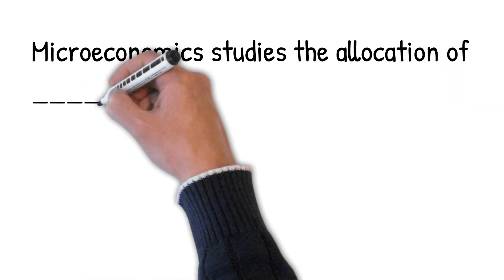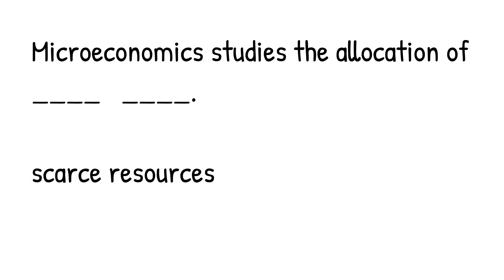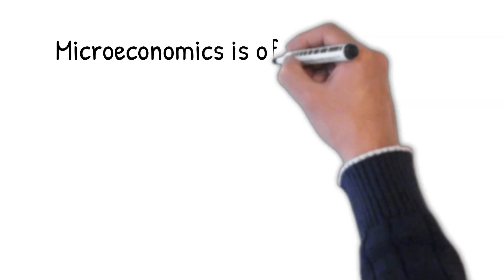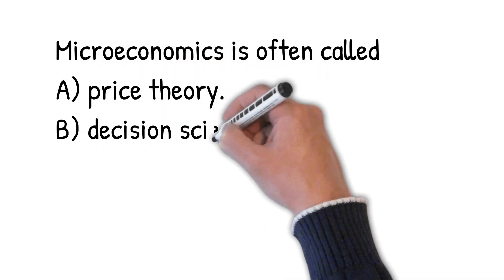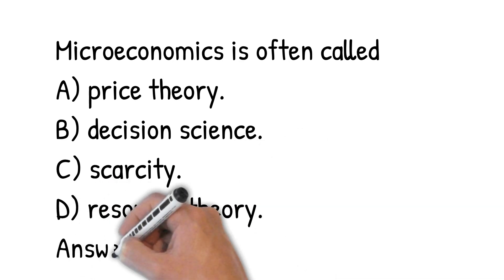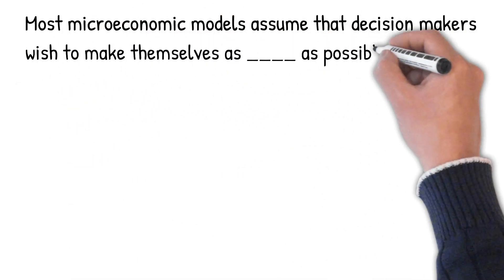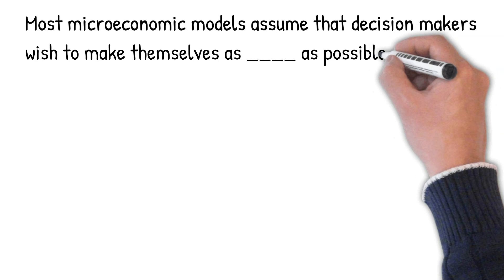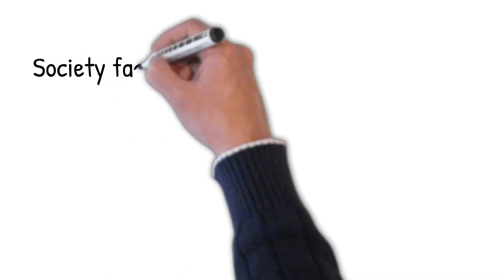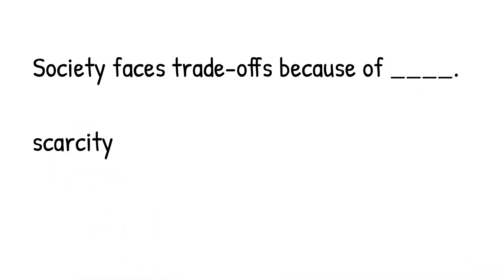Microeconomics studies the allocation of scarce resources. Microeconomics is often called price theory. Most economic models assume that decision-makers wish to make themselves as well-off as possible. Society faces trade-offs because of scarcity.